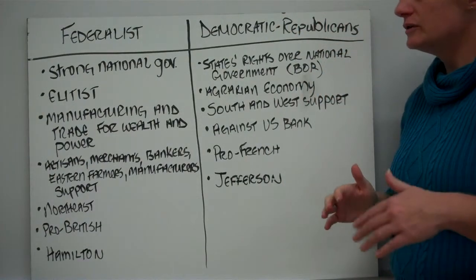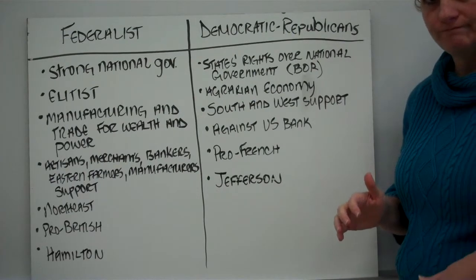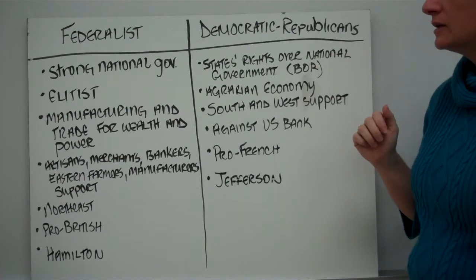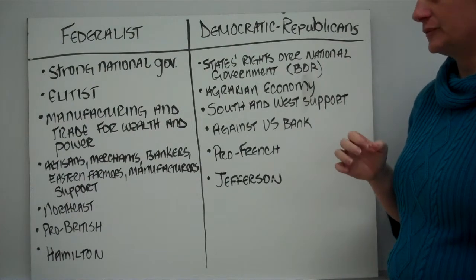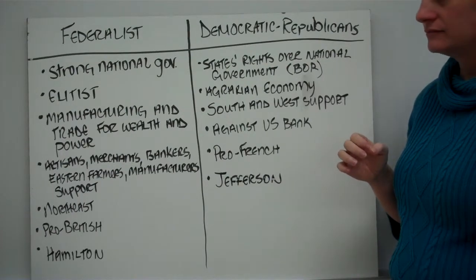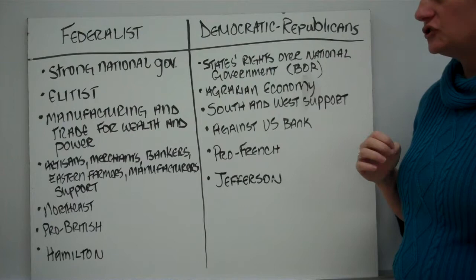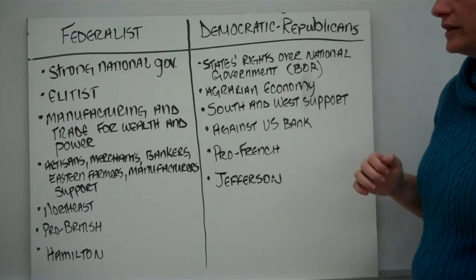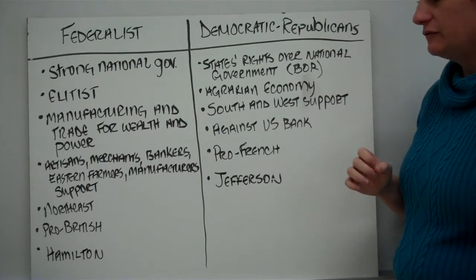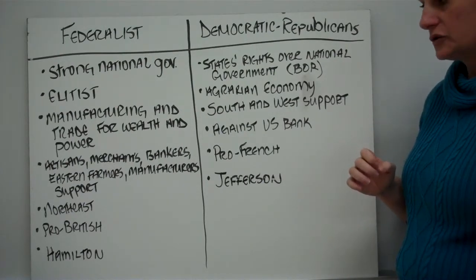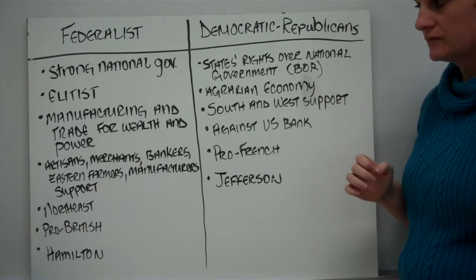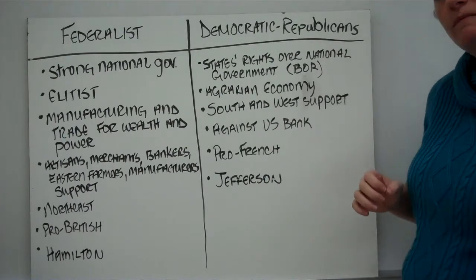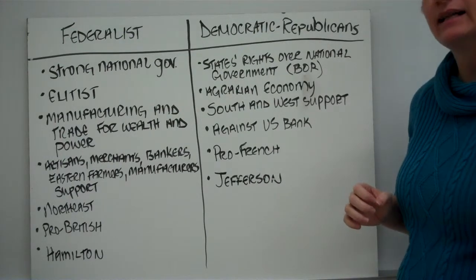Two political factions began to form: the Federalists and the Democratic-Republicans. The Federalists believed in a strong national government and were a bit elitist. They supported manufacturing, trade, and the pursuit of wealth and power. Artisans, merchants, bankers, eastern farmers, and manufacturers all supported Federalist viewpoints. They were located primarily in the Northeast, were very pro-British, and were led by Alexander Hamilton.